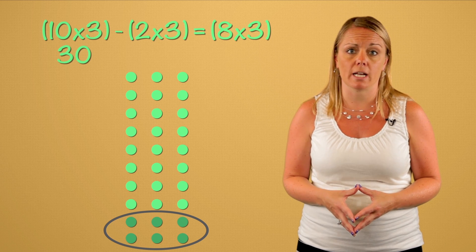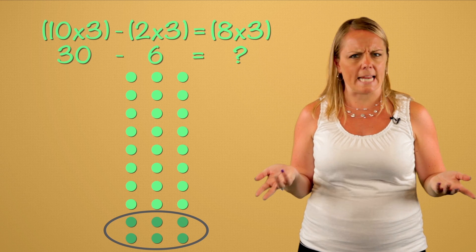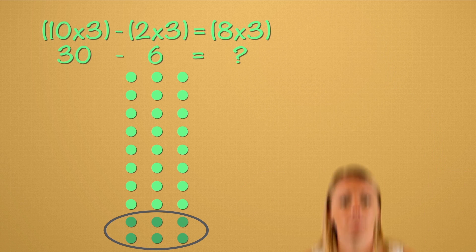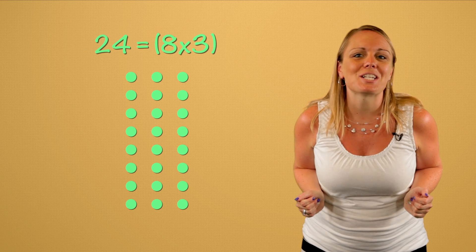And two times three is six. So what is eight times three? Eight times three is twenty-four.